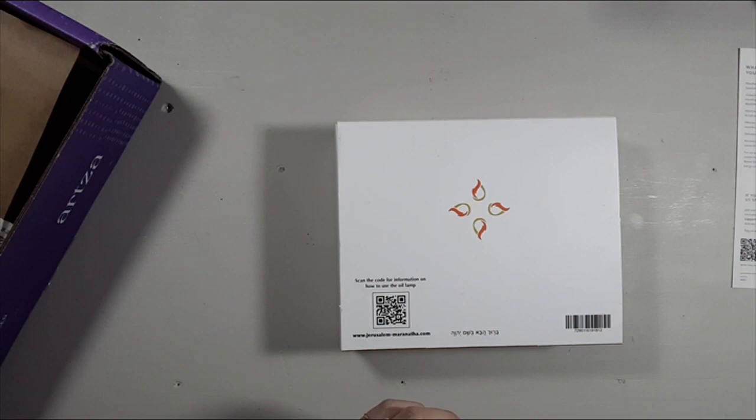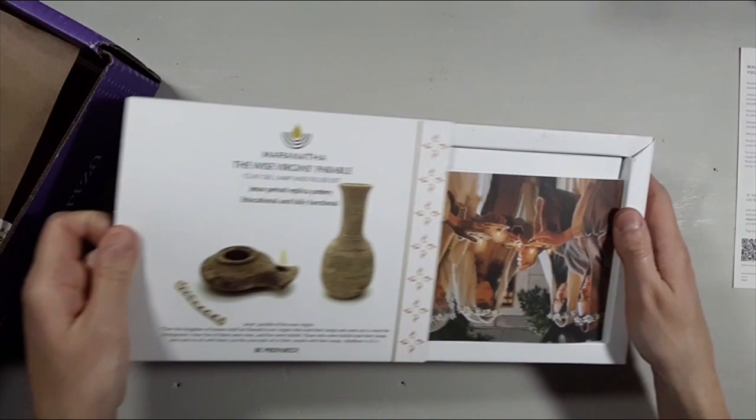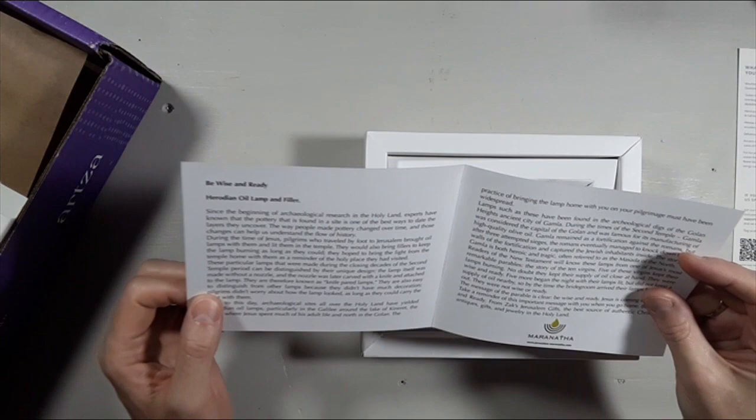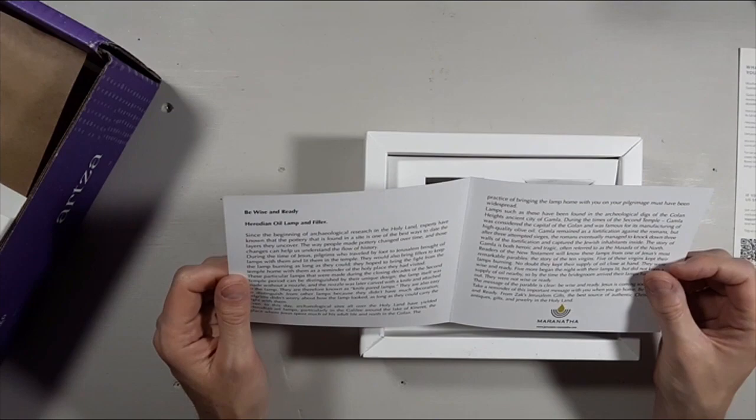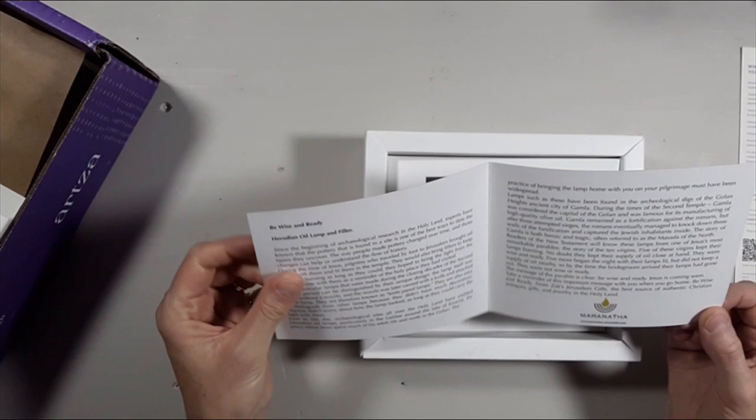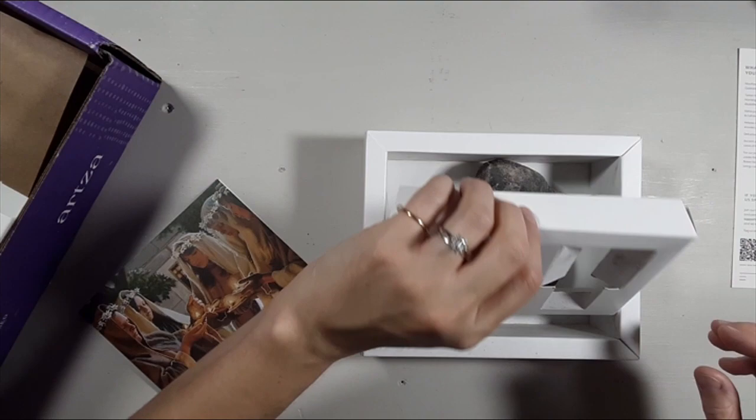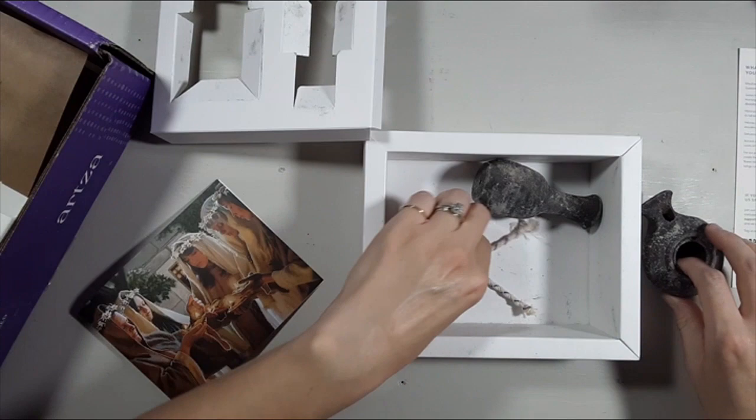Let's take a peek here. Awesome. What do we have here? Be wise and ready. I'm not going to read that entire thing to you, but it talks about Jesus coming back again and what this pottery represents for us. Oh, that's kind of come apart in here. That's really cool. Two cotton wicks here.